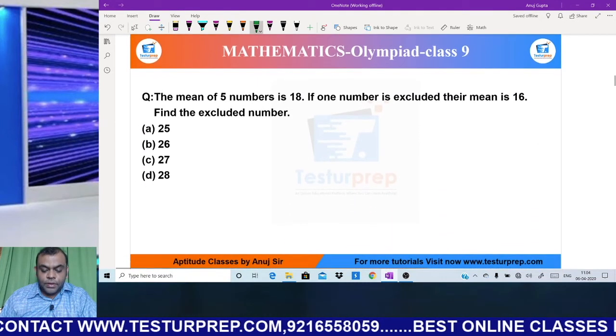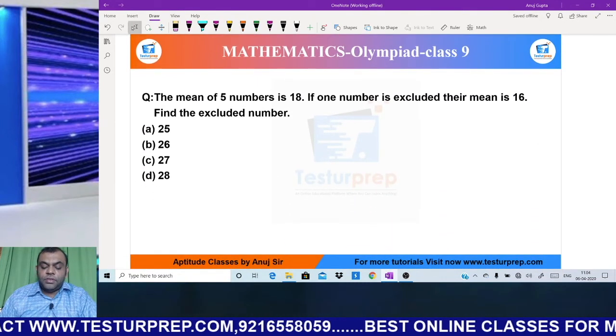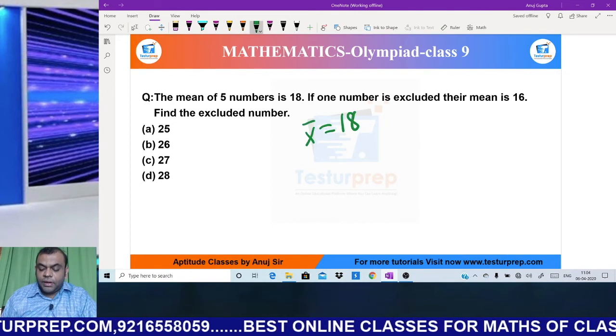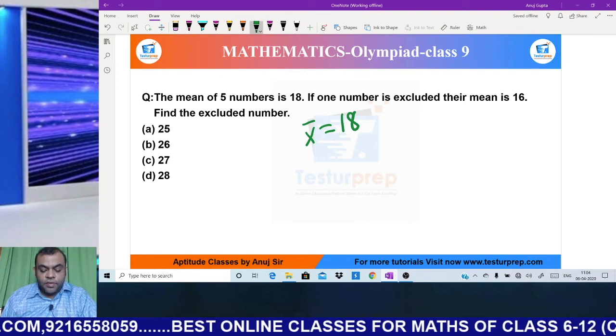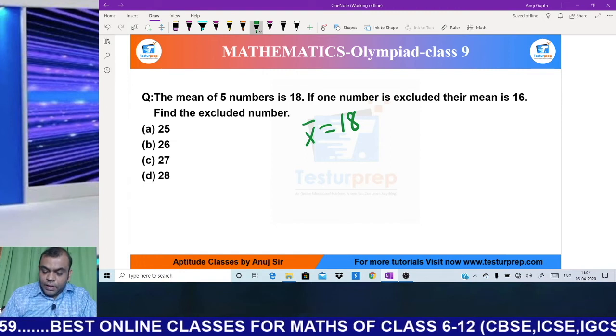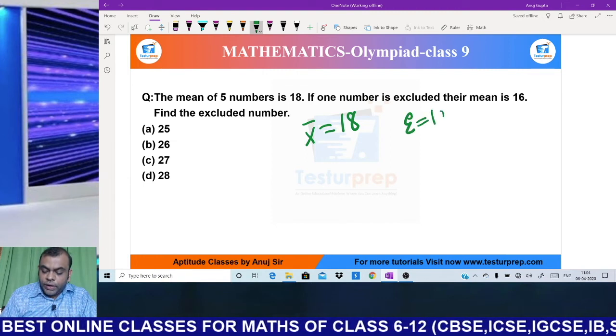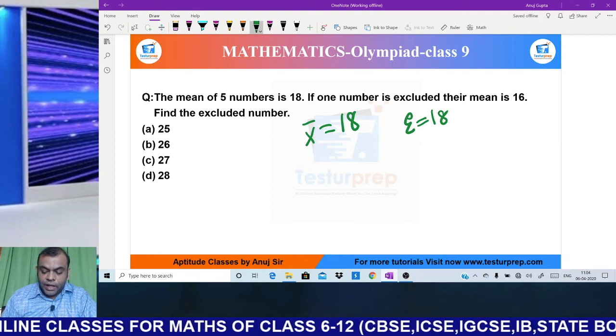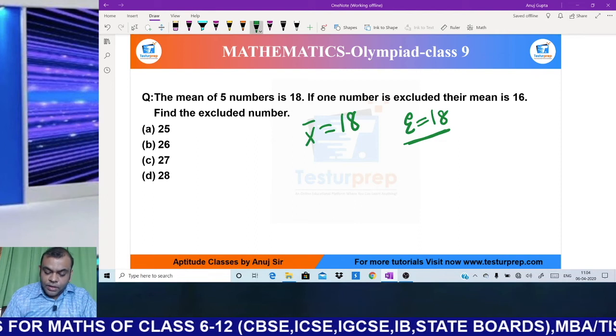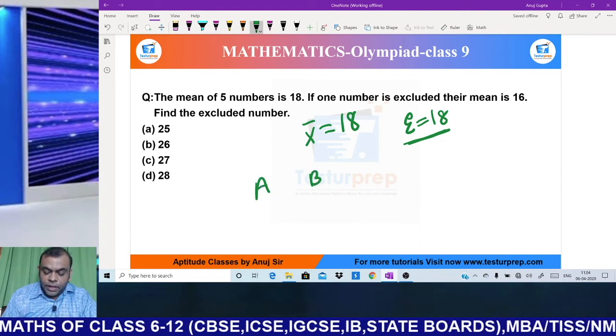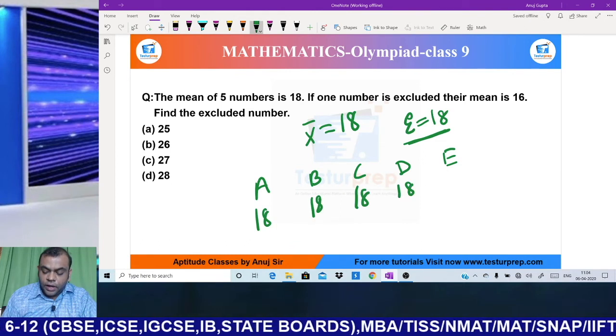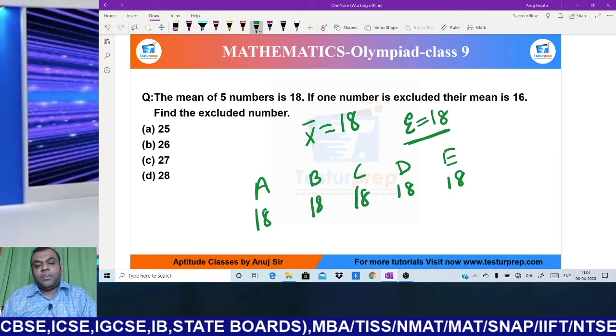Moving to the next question: the mean of 5 numbers is 18. If one number is excluded, the mean becomes 16. Find the excluded number. Imagine 5 friends A, B, C, D, E each had 18, 18, 18, 18, 18. When E left, everyone now has 16, 16, 16, 16.